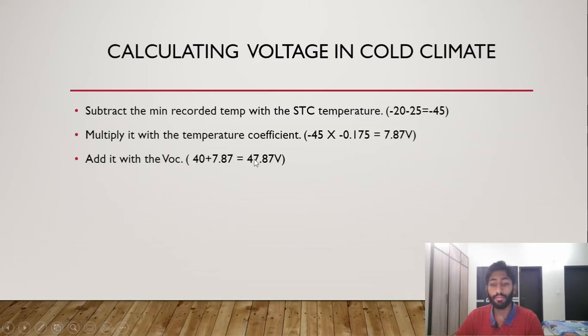So you get 47.87 volts. This is a new value, the new voltage value in cold climates, because this will be able to allow you to size better, to choose better wiring for cold climates, and to choose a better inverter as well. So you make sure you don't go above that voltage level during the winter season.